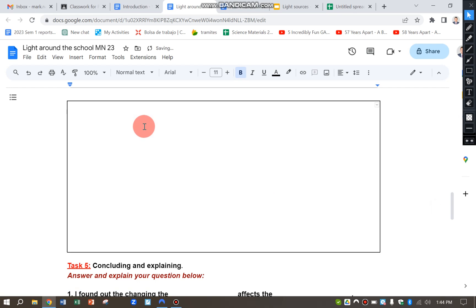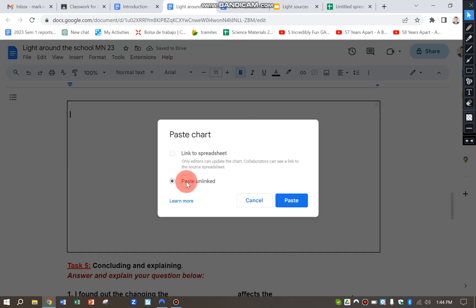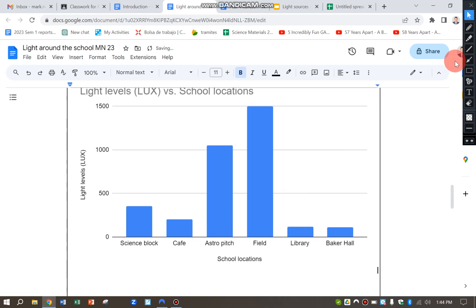And then control V and paste there. And you can see that the highest level of light around the school for this experiment on this day at this time when you did the experiment was the field, which is 1500 lux.